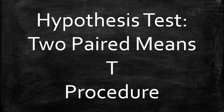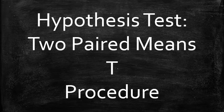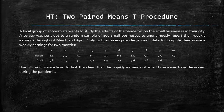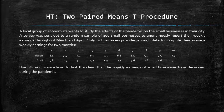I will show how to apply the two-paired means T procedure to test a statistical claim about two-paired population means. Consider the following example. A local group of economists wants to study the effects of the pandemic on the small businesses in their city. A survey was sent out to a random sample of 100 small businesses to anonymously report their weekly earnings throughout March and April. Only 10 businesses provided enough data to compute their average weekly earnings for two months. Use a 5% significance level to test the claim that the weekly earnings of small businesses have decreased during the pandemic.